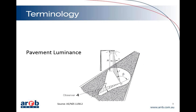Talking about pavement luminance: the mid-block sections of road you design to for pavement luminance, and that has an observer position which is 60 metres away from the area that you're designing for. So you have light that comes down from a light that's on a pole in a bracket — there's a certain overhang over the road — it hits the road surface and then it's reflected back to that observer position. Pavement luminance and the difference between that and illuminance is something that I often find people get confused about.